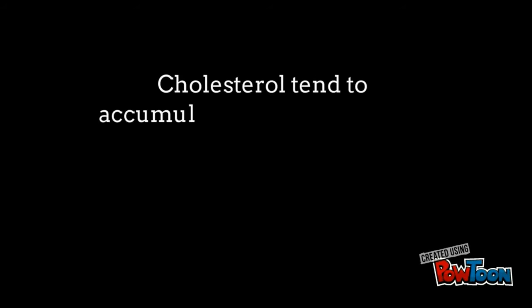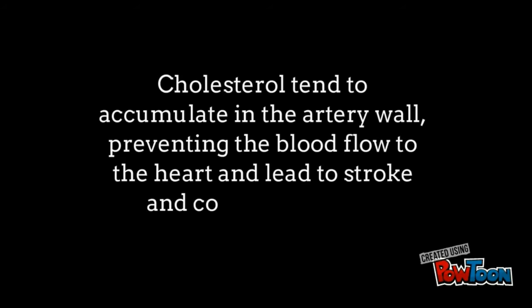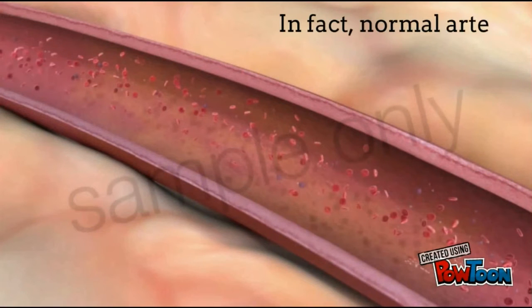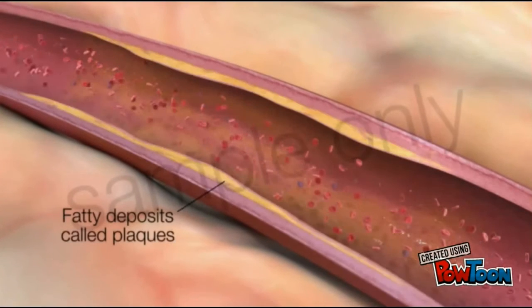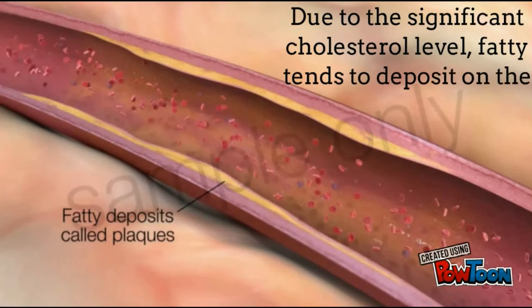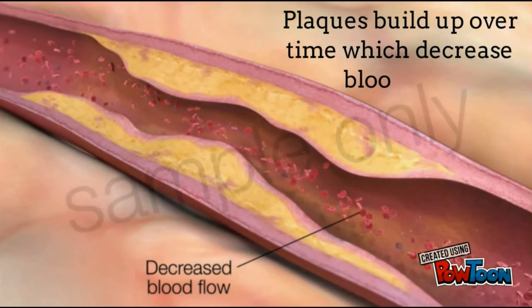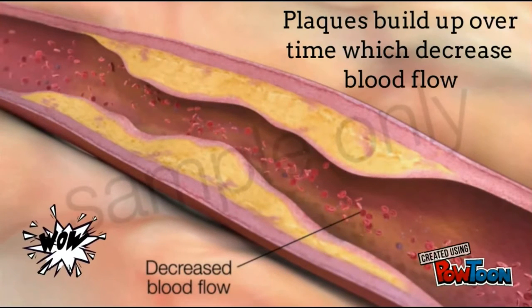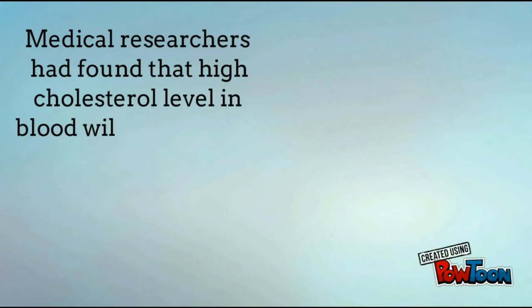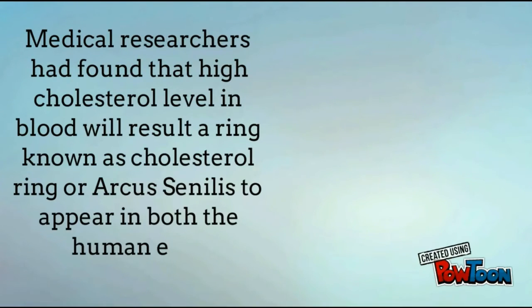Cholesterol tends to accumulate in the artery wall, preventing blood flow to the heart and leading to stroke and coronary disease. A normal artery allows blood to flow freely; however, due to significant cholesterol levels, fatty deposits build up on the artery wall and plaques form over time, decreasing blood flow. Medical researchers have found that high cholesterol levels in the blood cause a ring known as a cholesterol ring, or arcus senilis, to appear in both human eyes.